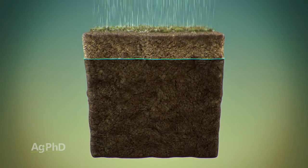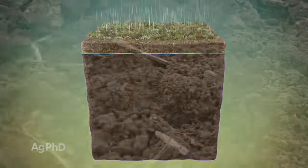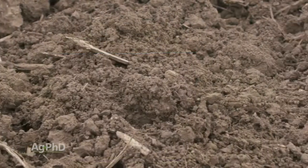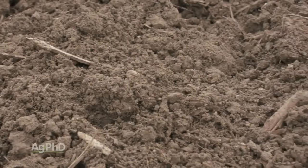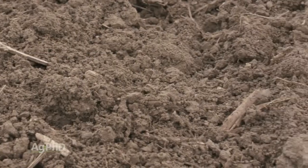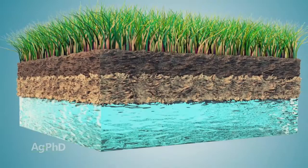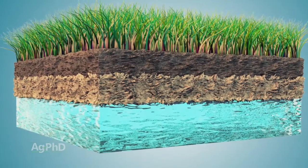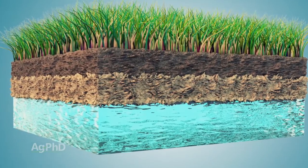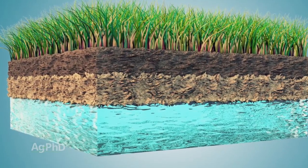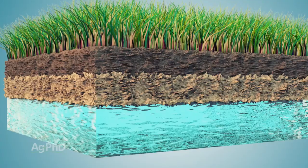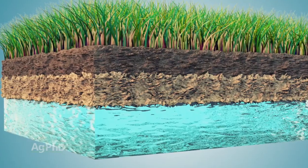What we're trying to do is keep that ideal balance out in our soil with 25 percent water, 25 percent air, and 50 percent dirt. The big key is if you get too much water coming up from the bottom, it forces all the air out of the soil — and that's bad for microbes and bad for our crops.